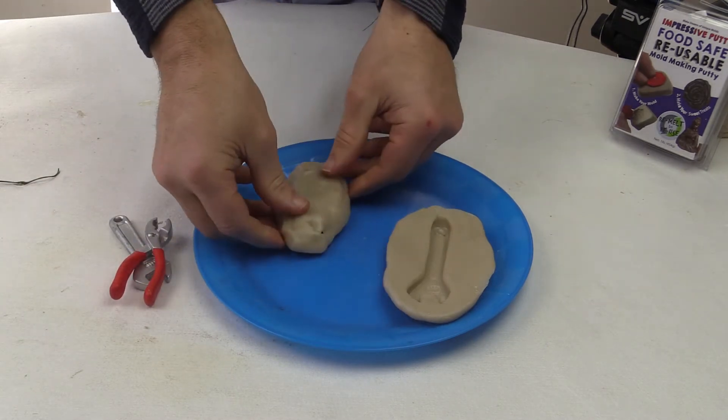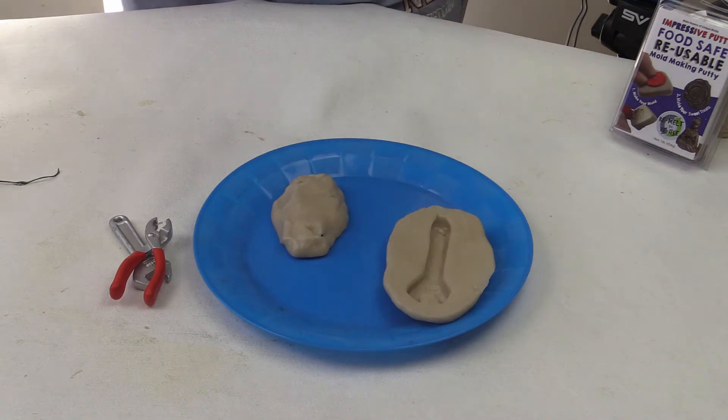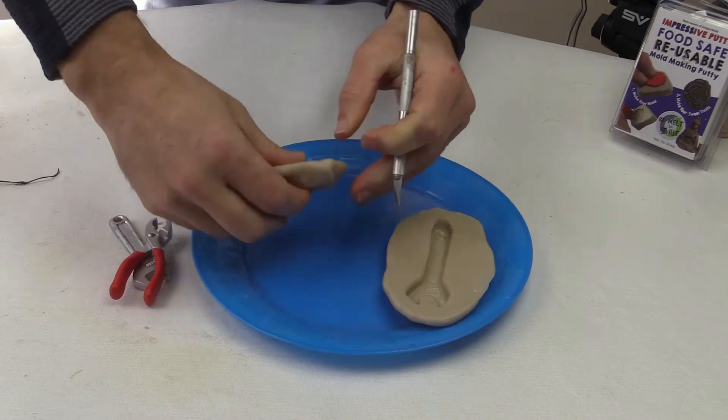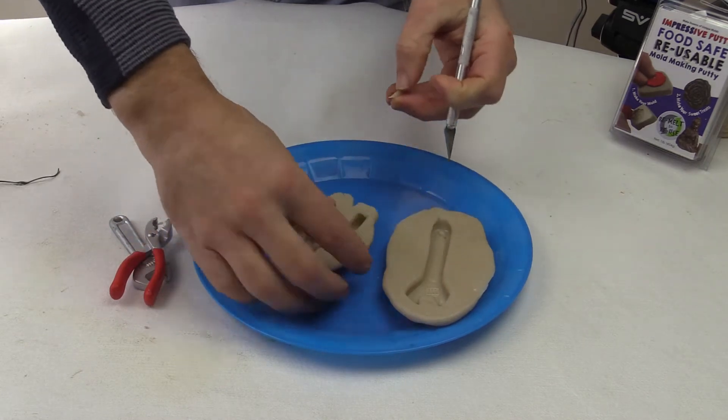Oh no, there's a small hole in the putty. Luckily you don't have to worry. Good thing this is a reusable molding material. With just a little heat you can fix the mold or reshape it.